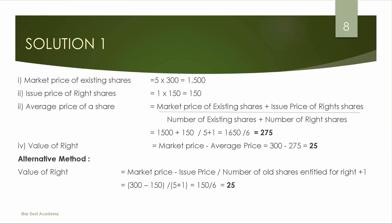For the alternative method, the equation is: Value of right = (Market price minus Issue price) ÷ (Number of existing shares + number of right shares) = (300 minus 150) ÷ 6 = 150 ÷ 6 = 25 rupees.